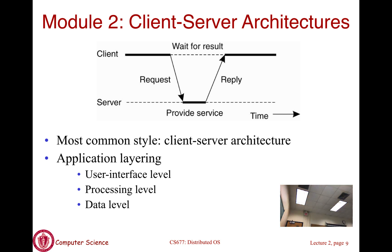Now we will talk about client-server architecture. We have done a broad brush introduction to all kinds of architectures. Now we are going to focus on one — the client-server model. This is a very common architecture. In this case, our application is split into two pieces: a client piece and a server piece. The server piece does all the work; the client piece requests work from the server. By server, we mean a piece of software that provides a service — not just the hardware. Similarly, client is a piece of code that is making requests to the server.